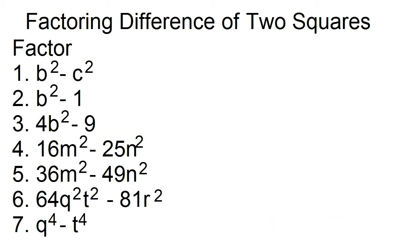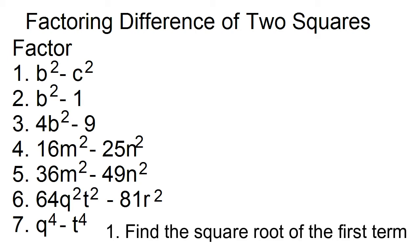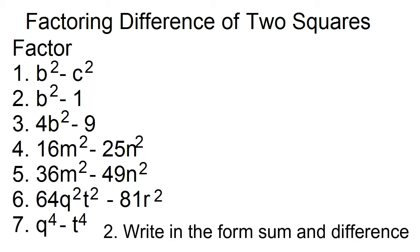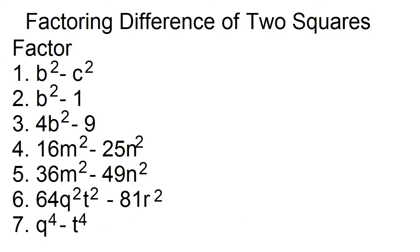Here are seven examples of polynomials that have difference of two squares form. Number one: factor b squared minus c squared. Let b squared be the first term and c squared be the second term. To factor, find the square root of each of the terms. The square root of b squared is b, and the square root of c squared is c. Then write in the form sum and difference of two terms. The factors are b plus c and b minus c.